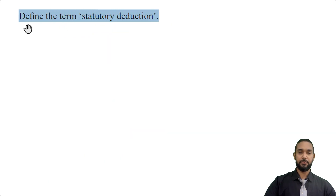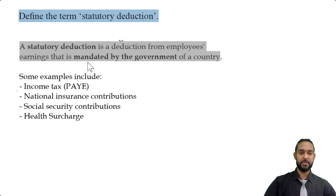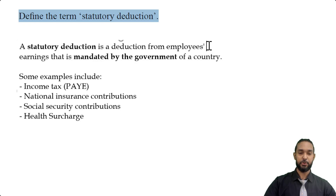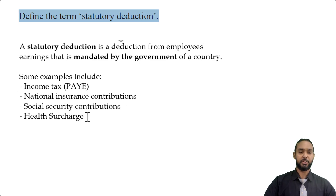Part B starts off: define the term statutory deduction. A statutory deduction is a deduction from employees' earnings that is mandated by the government of a country — in other words, it is law. Some examples include income tax or PAYE, national insurance contributions, social security contributions, and in Trinidad there's something called health surcharge, which is a compulsory weekly charge used to finance the public healthcare system.